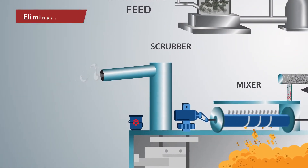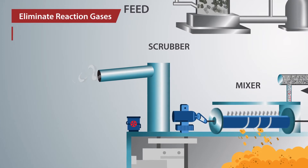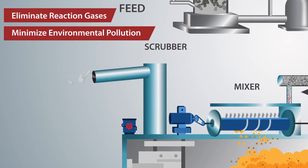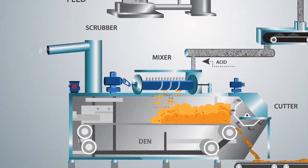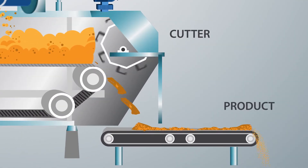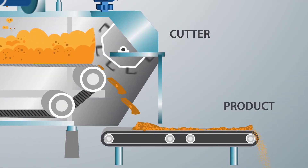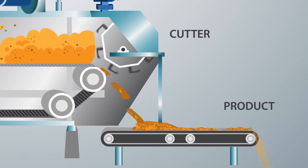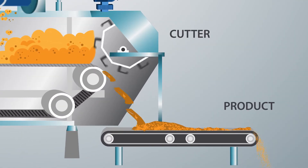Void scrubbers eliminate the reaction gases and minimize environmental pollution. A cutter slices the material when it reaches the outlet. Finally, a conveyor belt delivers the powder to stores for curing.